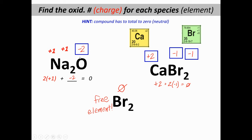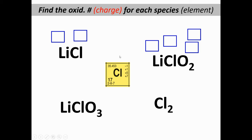Here are the answers: oxygen has to be minus two — plus one, plus one, and minus two adds up to zero. Calcium is always plus two, so each bromine must be minus one. Plus two, minus one, minus one adds up to zero. Remember, Br₂ is a free element — bromine only with bromine — so the oxidation number is zero.